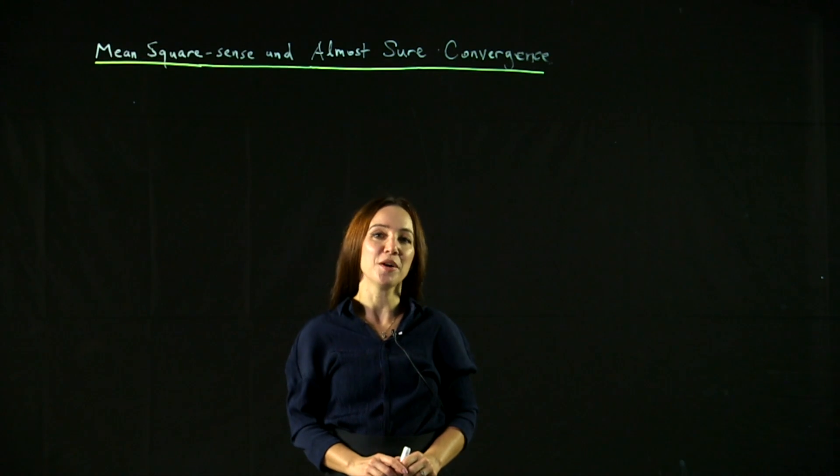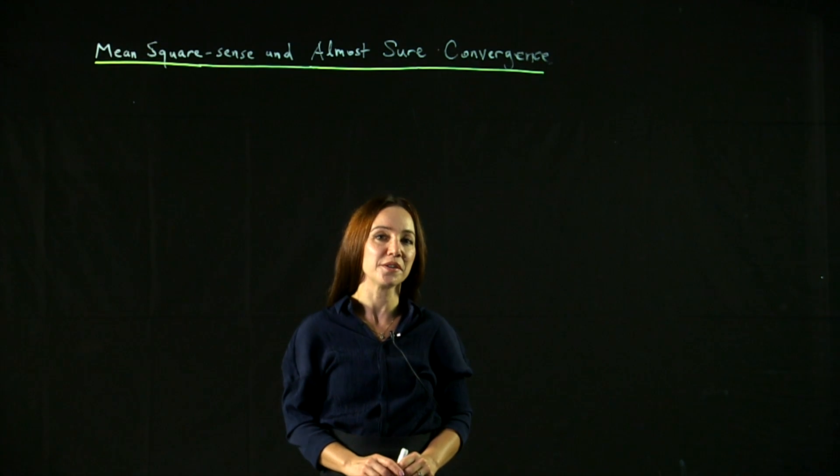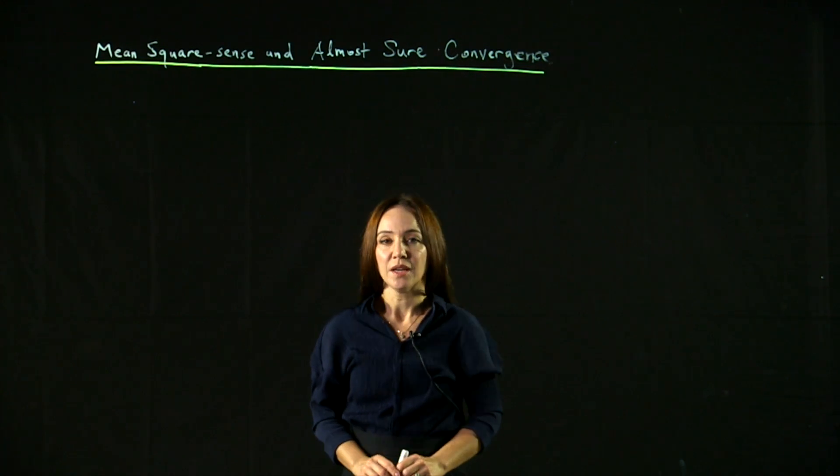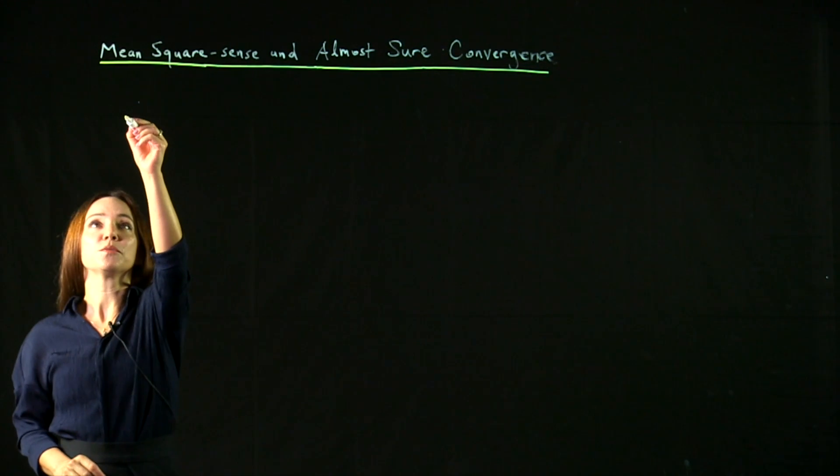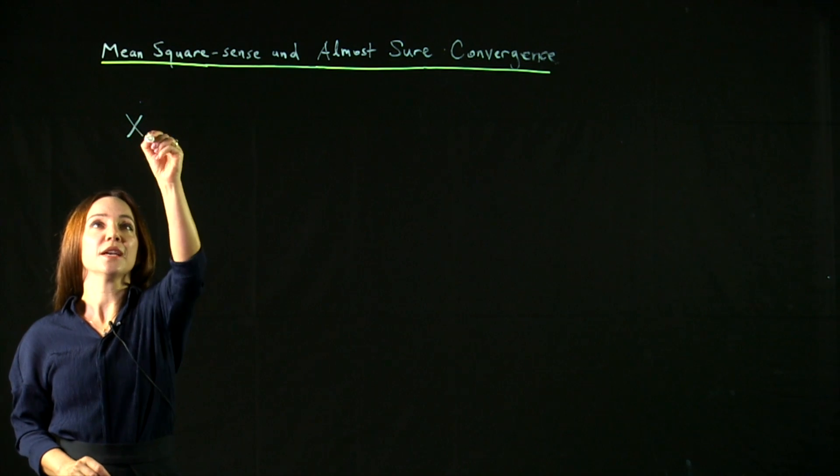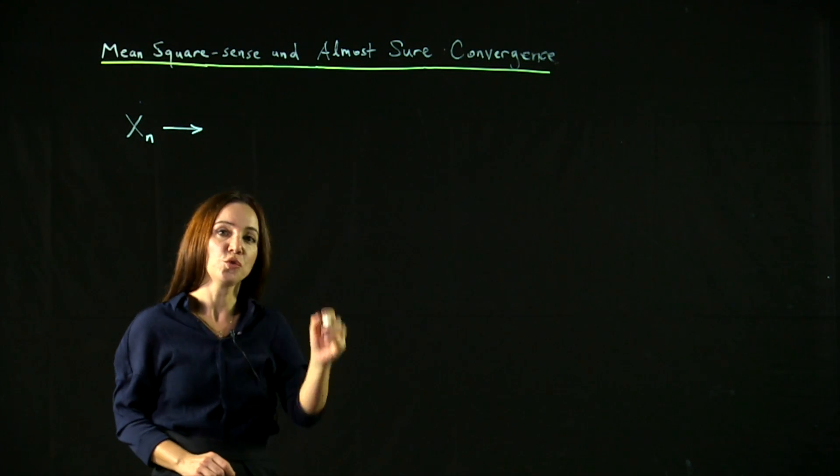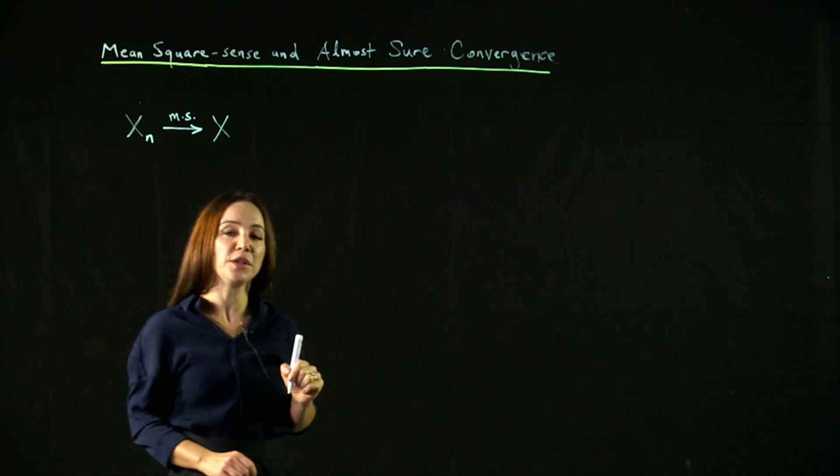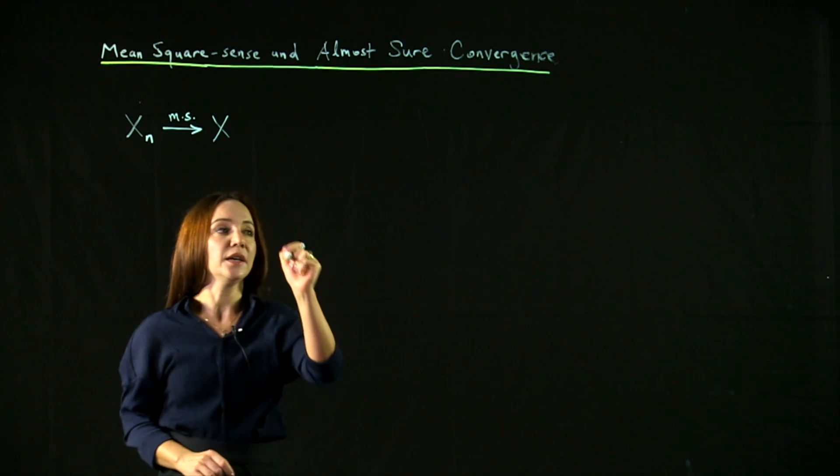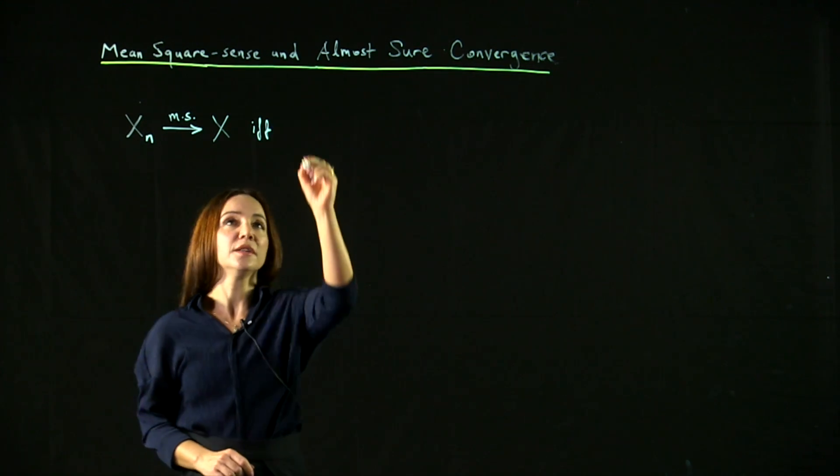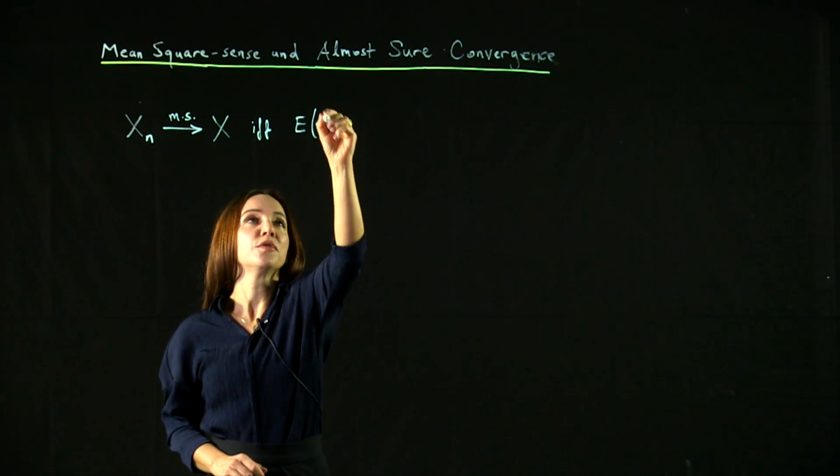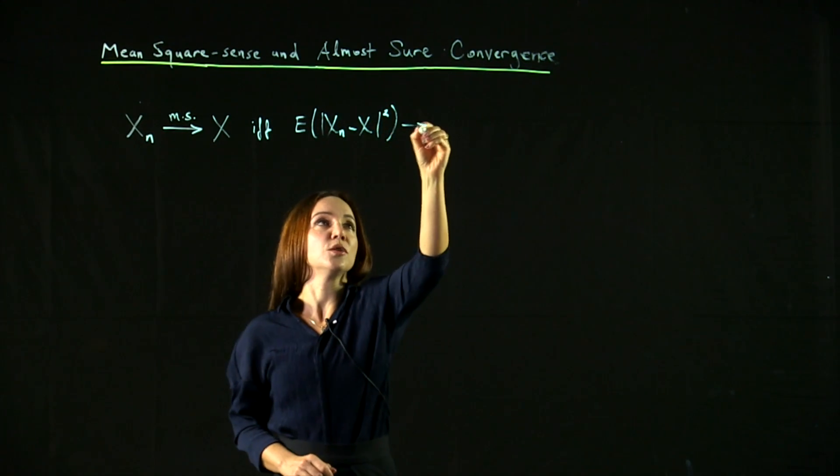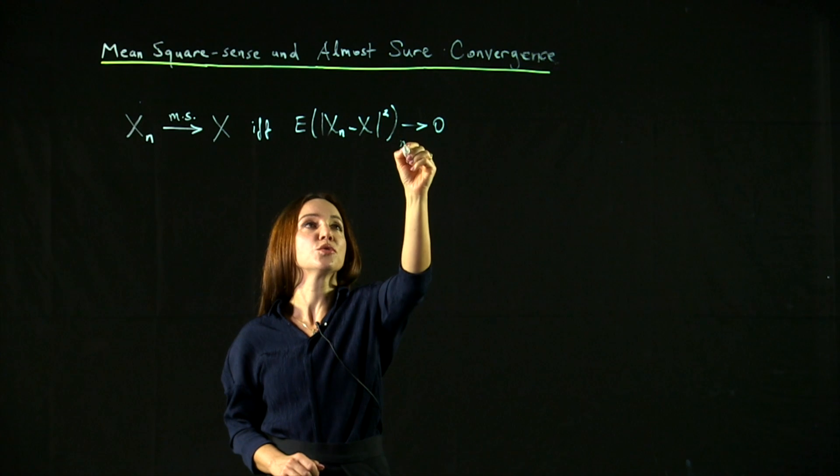In this lecture, we will talk about convergence in the mean square error sense and almost sure convergence. A random sequence xn is said to converge to a random variable x in the mean square error sense if and only if the expectation of xn minus x squared converges to zero as n goes to infinity.